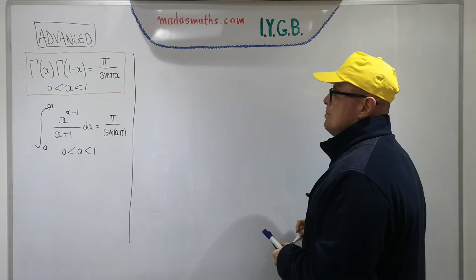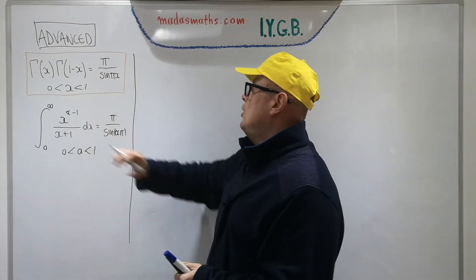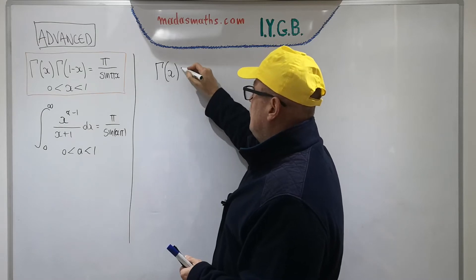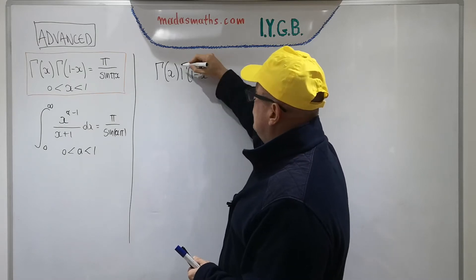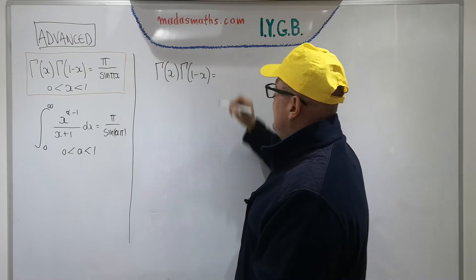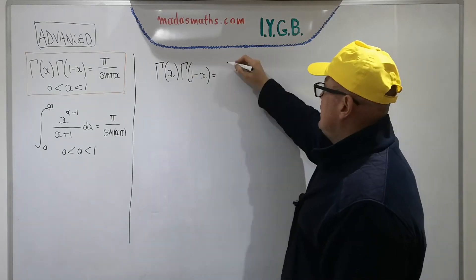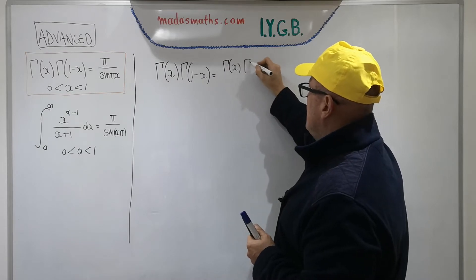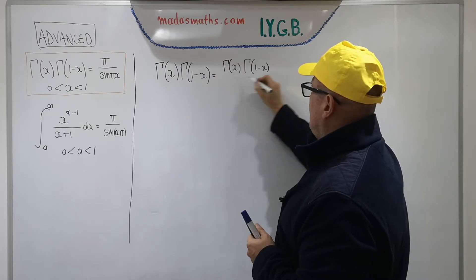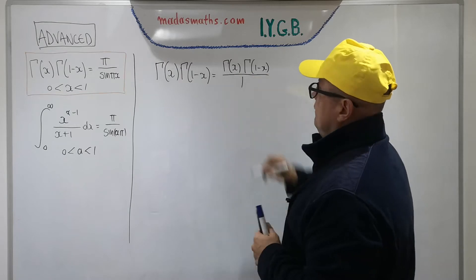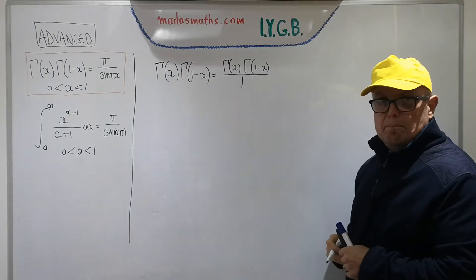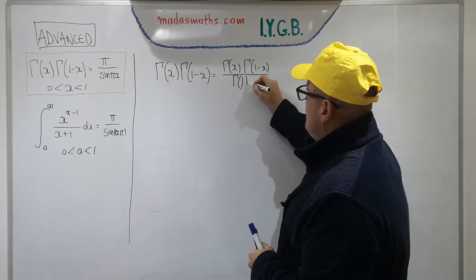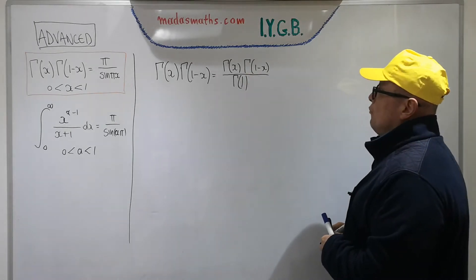So where do we start with this particular proof? We're going to use this result somewhere along the way. What is gamma of x times gamma of 1 minus x? I'm going to do a few silly steps in the beginning, so gamma of x times gamma of 1 minus x over 1, which is the gamma of 1.